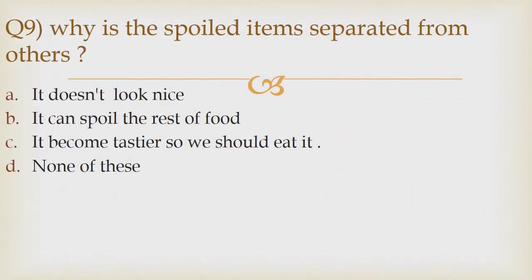Question 9: Why is the spoiled item separated from others? Option A it doesn't look nice, option B it can spoil the rest of the food, option C it becomes tastier so we should eat it, option D none of these. The correct answer is option B it can spoil the rest of the food.